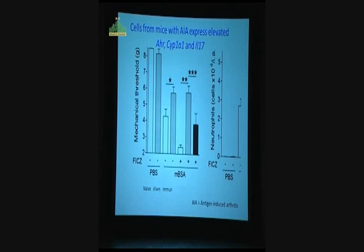You immunize them with PBS or methylated BSA, looking at naive animals. This is mechanical threshold, a measurement of pain. In other words, you put some weight on the paw - the lighter weight you need to make them withdraw, the more painful it is. High means not painful, low means very painful in terms of the weight that you put on it.